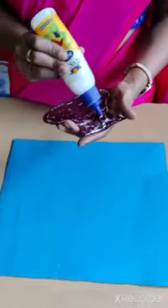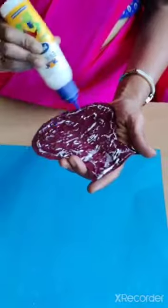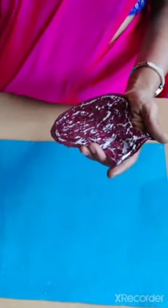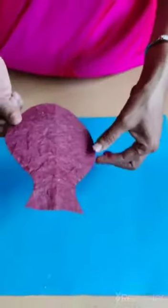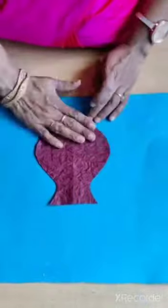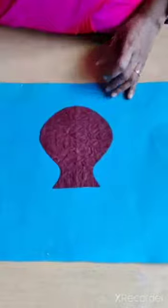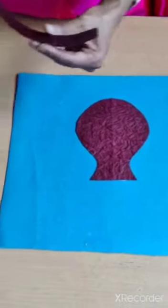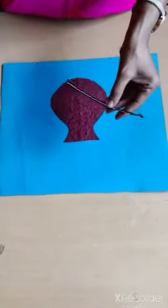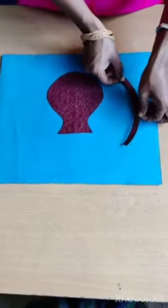Now let us apply glue to the pot-shaped cardboard or handmade sheet. Let us stick it in the center this way. Now let us take another sheet and stick it this way.